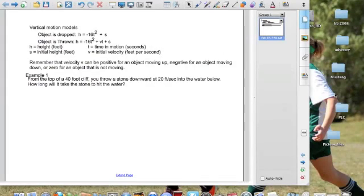All right, we're going to look at vertical motion models. We have already done the top one. An object is dropped, so h is equal to negative 16t squared plus s. We have already looked at that earlier on in the chapter, and most of us did pretty well with that.